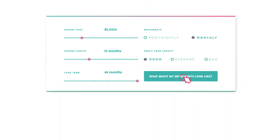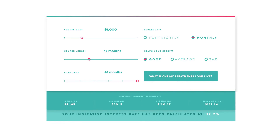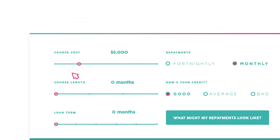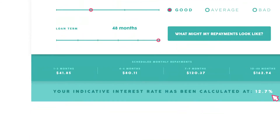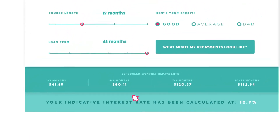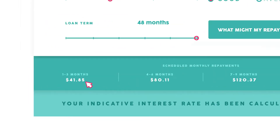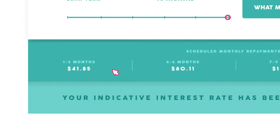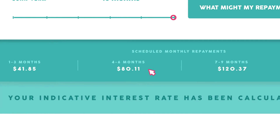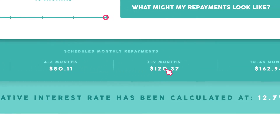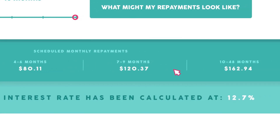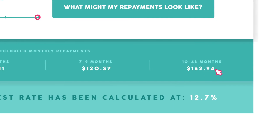Study Loans' Loan Calculator shows you what your Study Loans repayments might look like. Enter the course cost, length and loan term. You'll get an indicative interest rate along with what the scheduled repayments look like on a month-to-month basis over the life of the loan. You pay principal and interest on activated units of study. Only at the end of the course, when all funds are released, do you pay principal and interest on the entire loan.